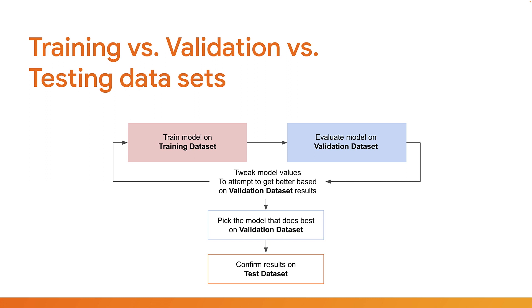This allows you to spot when the model overfits itself to the training data, which is where it essentially learned the examples perfectly and fails to generalize well. Instead, you test it against examples it never saw before to check for this, and this data is never used to make changes to the model, so it can never accidentally learn from it. Ultimately, you want a model that can generalize well, as the real world will contain unseen examples.